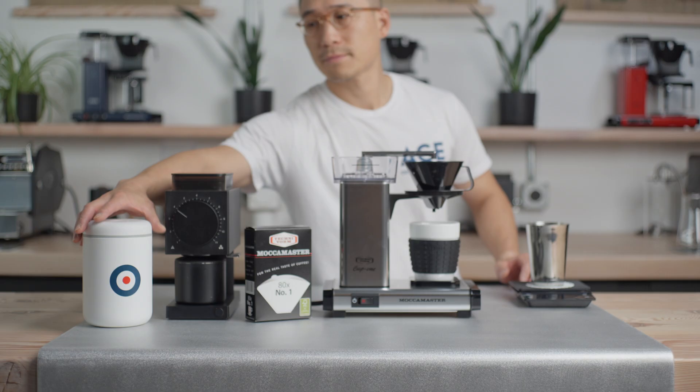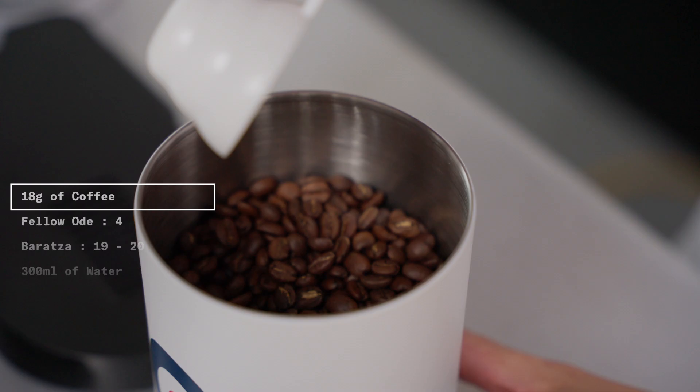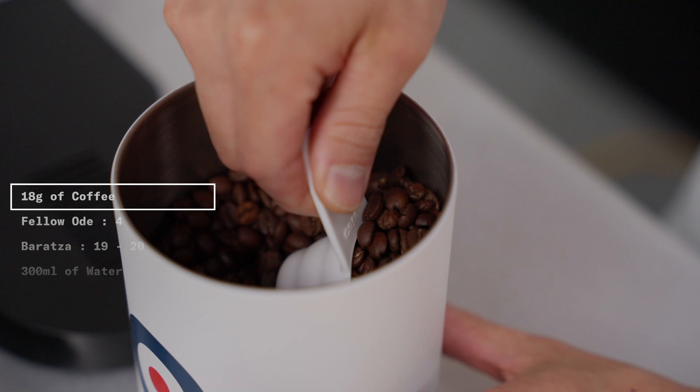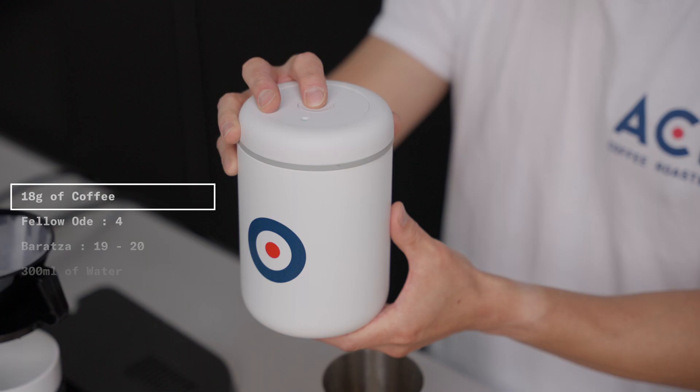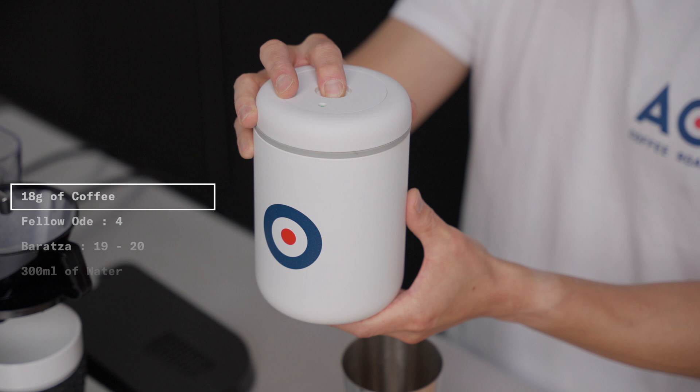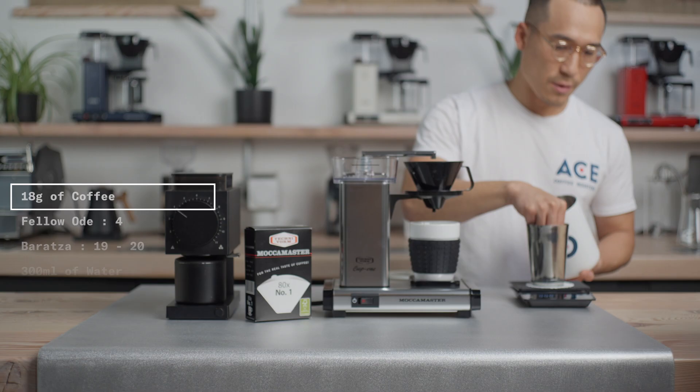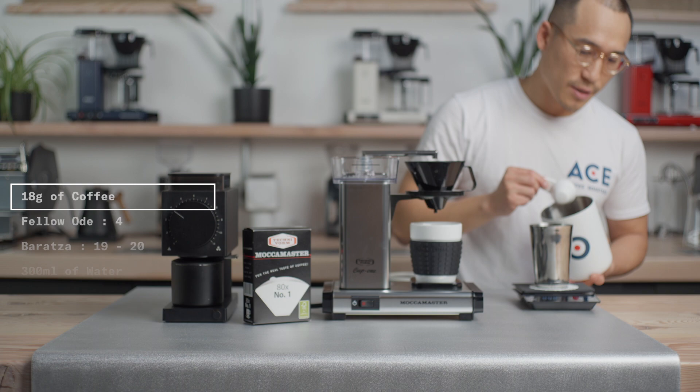Weigh out 18g of coffee. We'll be using our single origin coffee and aiming for a high TDS and high extraction brew. If you want a little less strength, you can lower the amount of coffee, going as little as 17g without needing to adjust the grind.